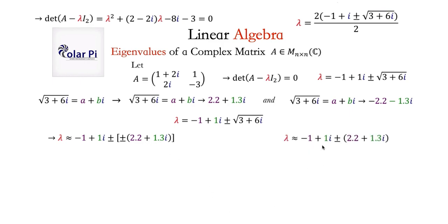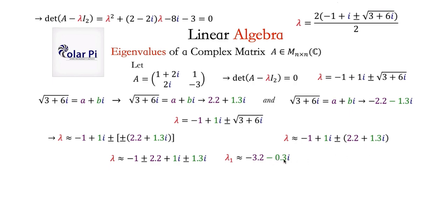Our two lambdas are this: once with the plus and once with the minus. I distributed the plus or minus and put the real parts together and the imaginary parts together. With the minus: minus 1 minus 2.2 is minus 3.2, and 1i minus 1.3i is minus 0.3i, so lambda 1 is negative 3.2 minus 0.3i. Dealing with the plus: lambda 2 is this. This video is at its conclusion. I hope you enjoyed it — remember this example, because in the next video on the Gershgorin disk theorem, we'll need to recall this matrix and these two eigenvalues. Keep watching, take care.